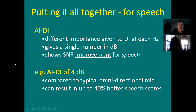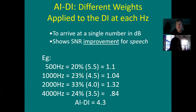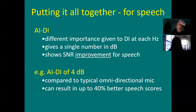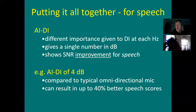Don't worry about the articulation-index weighted DI — what they call the AIDI — where they try to give different importance to different frequencies regarding polar plots. Essentially, if you have a 4 dB improvement in signal-to-noise ratio, that's about 20% better speech scores — 4 times 5% is 20. Nothing wrong with that.